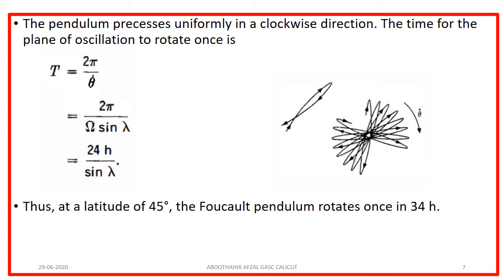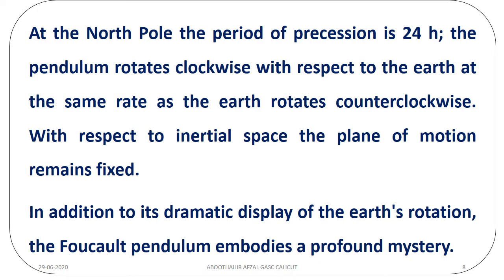If the experiment is conducted at the equator, sin(lambda) equals sin(0) equals 0, giving an infinite time period — meaning precessional motion is practically impossible at the equator, as the Coriolis force is very feeble there. At the poles, lambda equals 90 degrees, sin(90) equals 1, so the time period of precession is exactly 24 hours — the pendulum completes one precessional motion in one day. Two motions take place: the precessional motion and the vibrational oscillation, with frequency root of G/L and time period 2*pi*root(L/G). At the north pole, the pendulum rotates clockwise relative to Earth at the same rate Earth rotates counterclockwise, so with respect to inertial space, the plane of motion remains fixed.